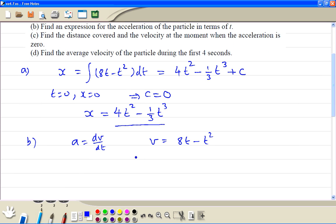So we have v equals 8t minus t². So we differentiate. We get a, so that's 8 minus 2t. So that's the expression for acceleration. You can write unit next to it, meters per second squared.